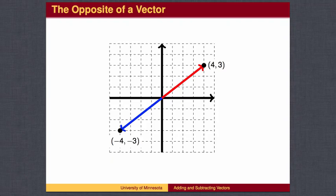The opposite of a vector is a vector of the same length that points in the opposite direction. If we first followed the red vector, then the blue vector, we would return to where we started.